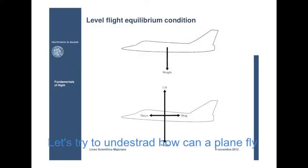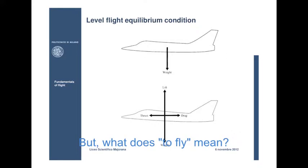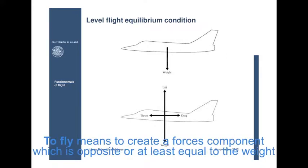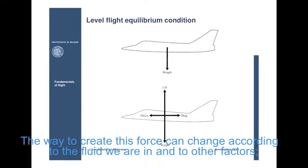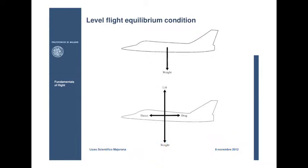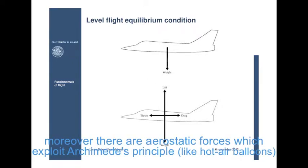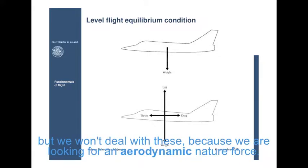Let's try to understand how a plane can fly. But what does to fly mean? To fly means to create a force component which is opposite or at least equal to the weight. Physicists call this force lift. The way to create this force can change according to the fluid we are in and to other factors. Moreover, there are aerostatic forces which exploit Archimedes principle, like hot air balloons, but we won't deal with these because we are looking for an aerodynamic nature force.